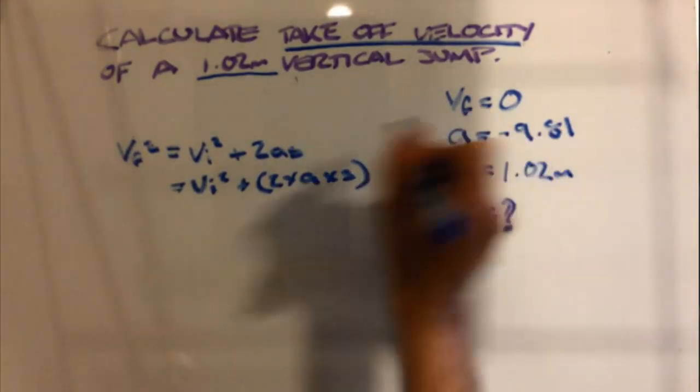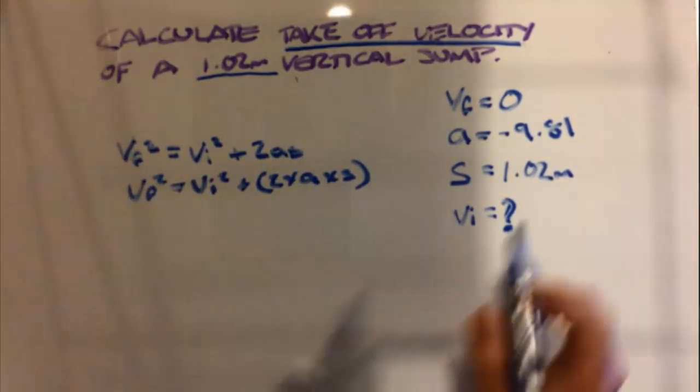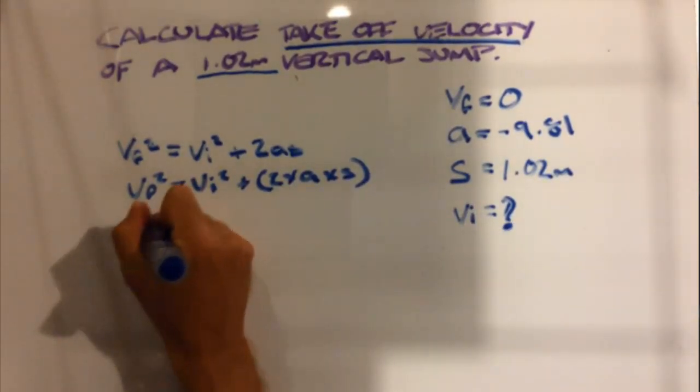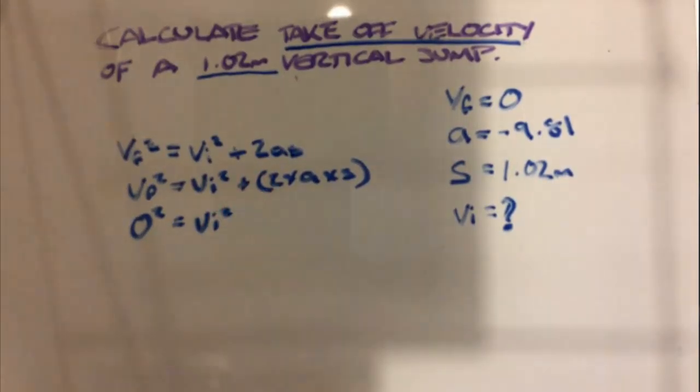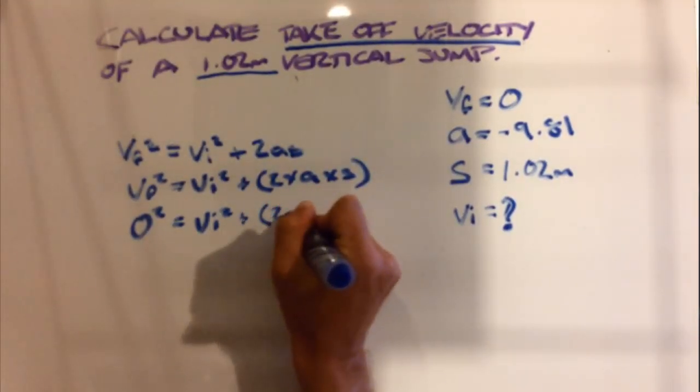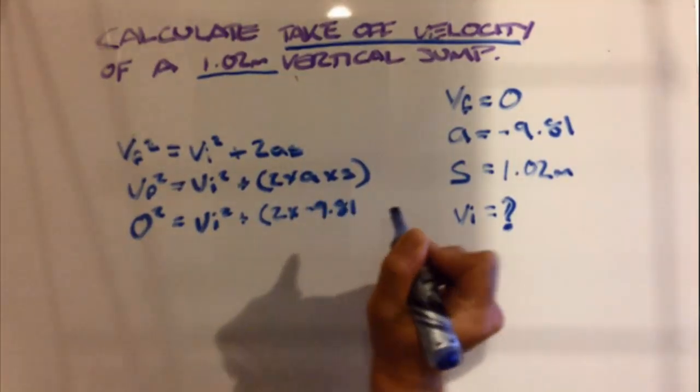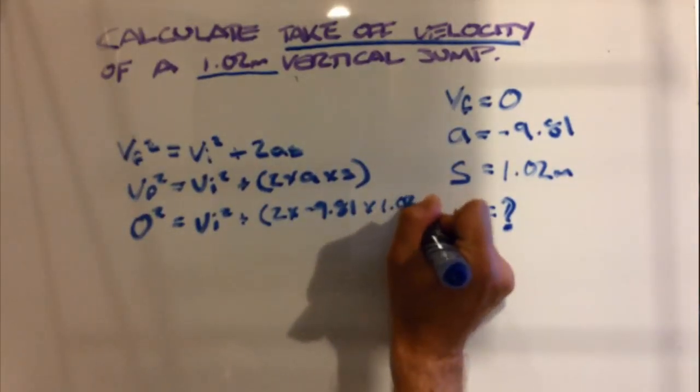We can now fill in from our key into our formula. vf is zero. We are trying to identify our initial velocity: vi² + 2 times negative 9.81 times 1.02.